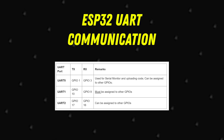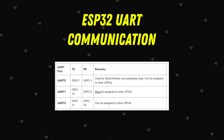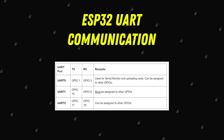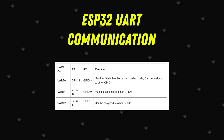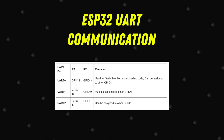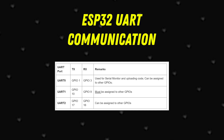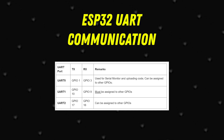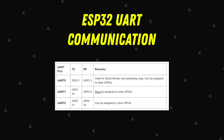UART 1 and UART 2 can be used for general purposes, and the transmitter and receiver can be configured on most GPIO pins. Typical defaults are GPIO 9 and GPIO 10 for UART 1, and GPIO 16 and GPIO 17 for UART 2.